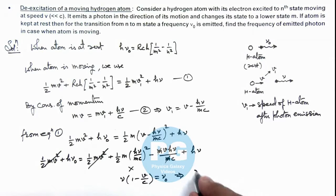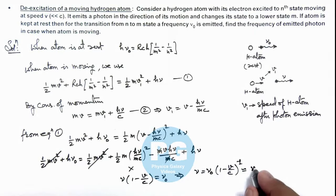This gives us nu is equal to nu_0*(1 - v/c)^(-1), which after binomial approximation we can write it as nu_0 multiplied by (1 + v/c), that will be the result of this problem.